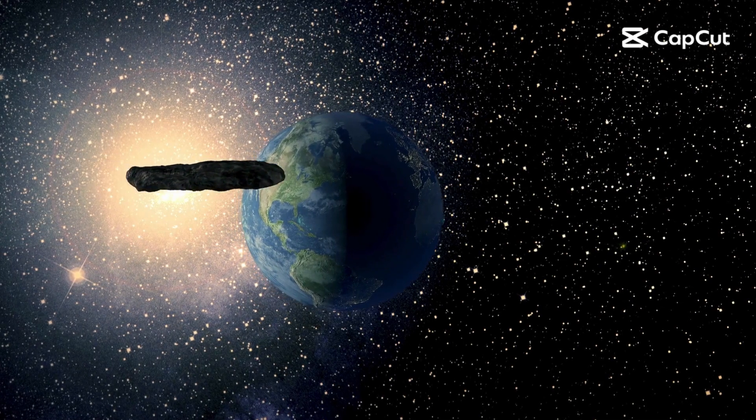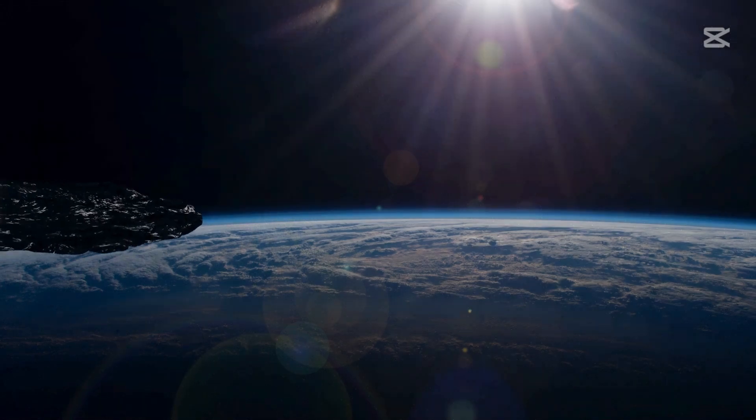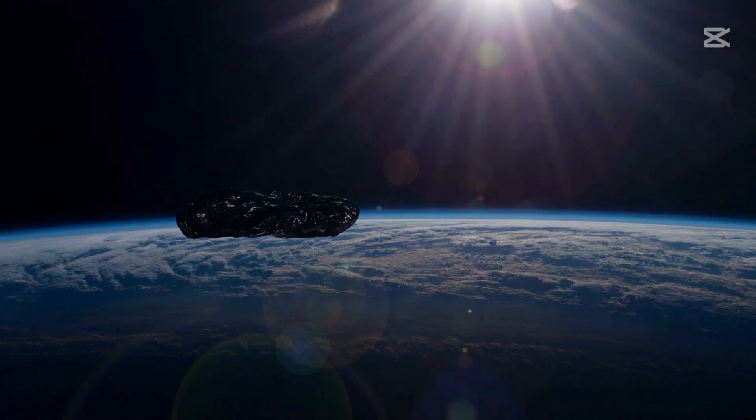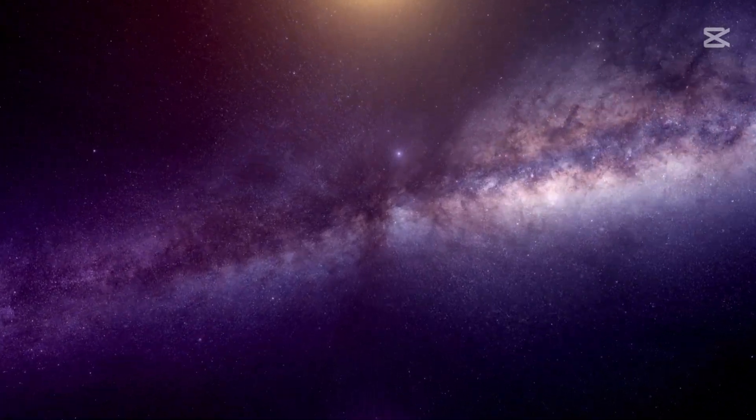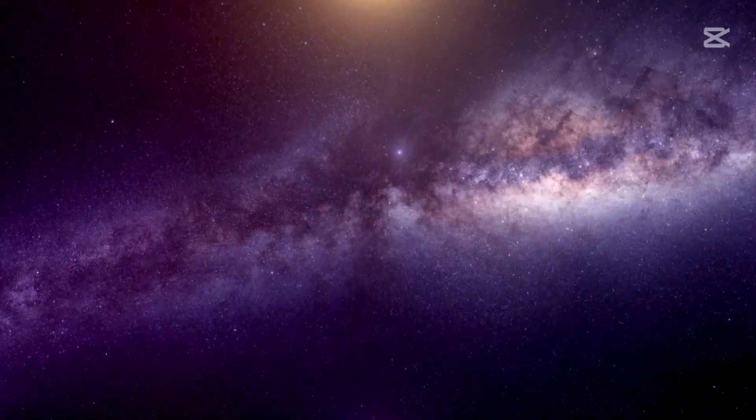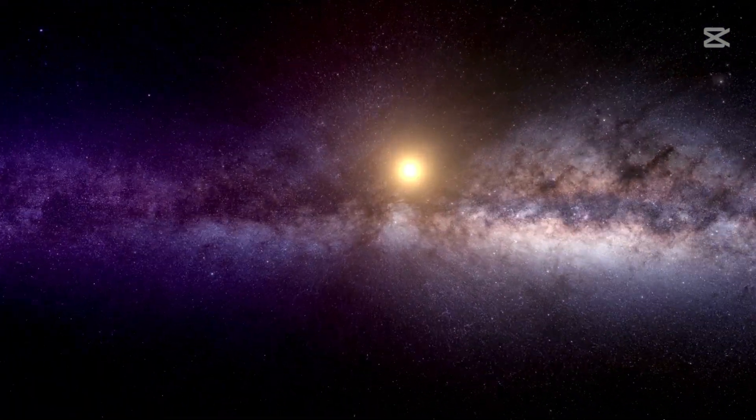In October 2017, astronomers made a groundbreaking discovery when they detected an object traveling through our solar system from interstellar space. This mysterious visitor was named Oumuamua, a Hawaiian word meaning scout or messenger.